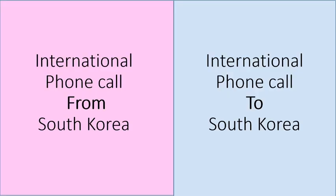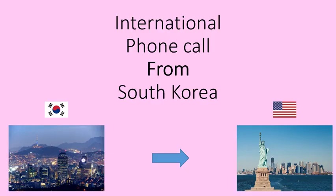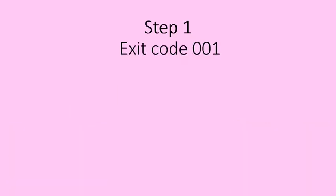First, I will explain how to make an international phone call from South Korea to another country, and then how to make an international phone call to South Korea. Let's say you're living in Seoul and you want to make a call to your friend living in New York. Step 1: dial the exit code. For South Korea, it's 001. If you want to make an international call, you have to enter a specific exit code for your country.